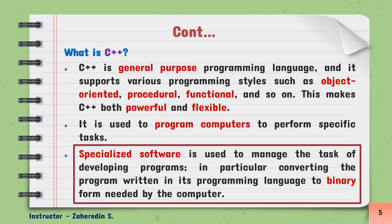For example, specialized software such as Code Blocks, Visual Studio, and Dev C++ are used. The computer will understand the same language as machine language, that is binary form. This specialized software converts the program into a format the computer can understand.